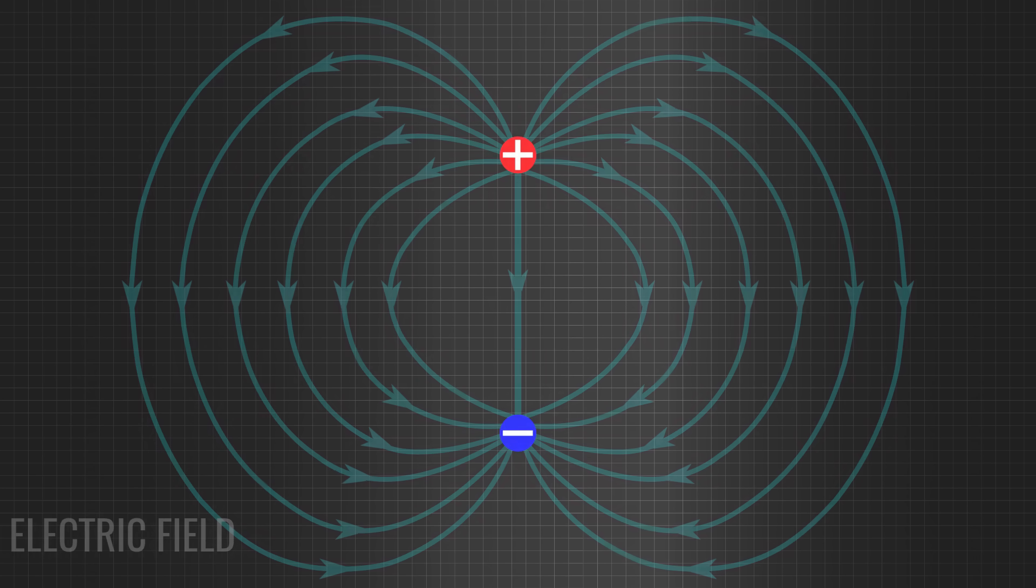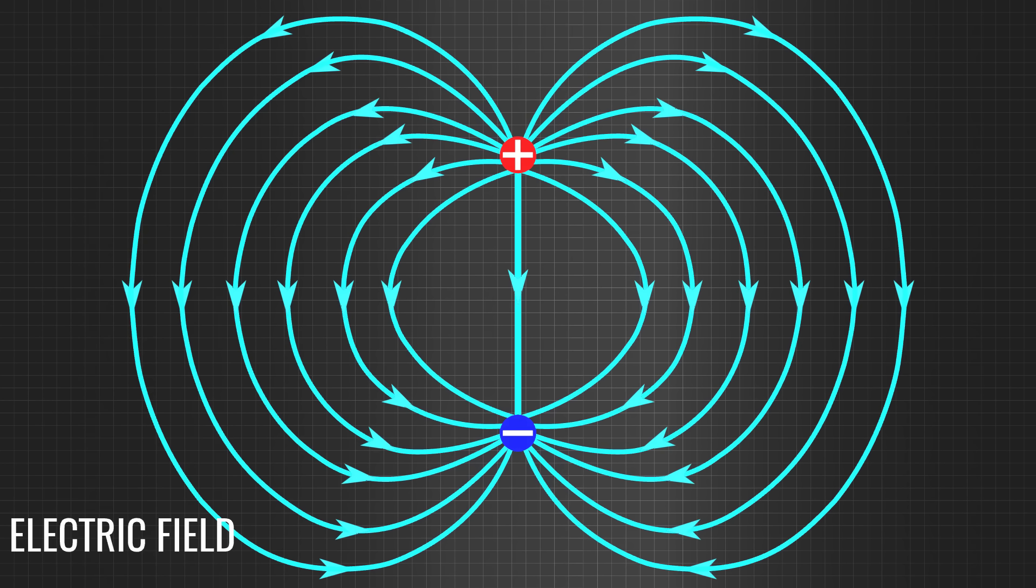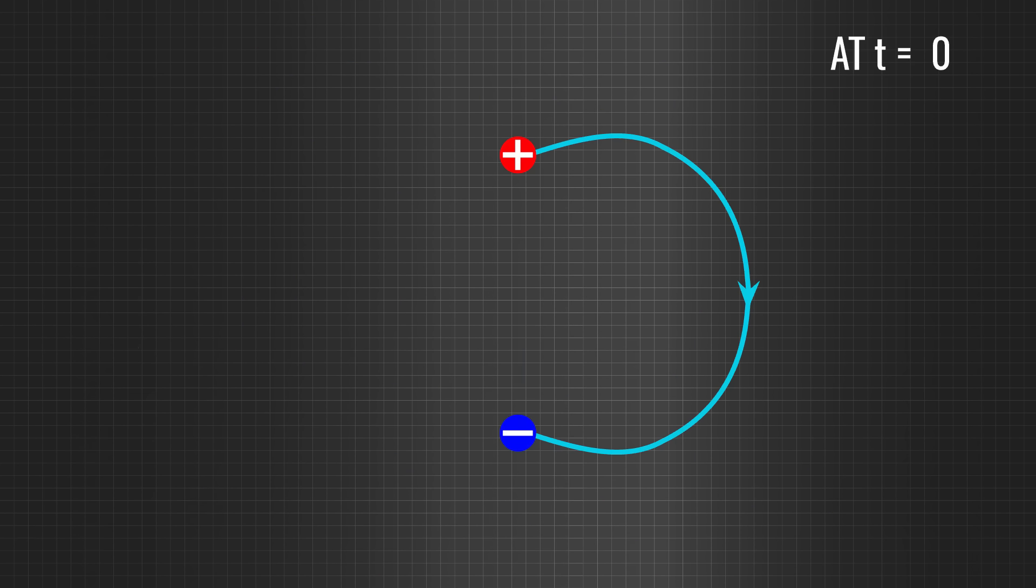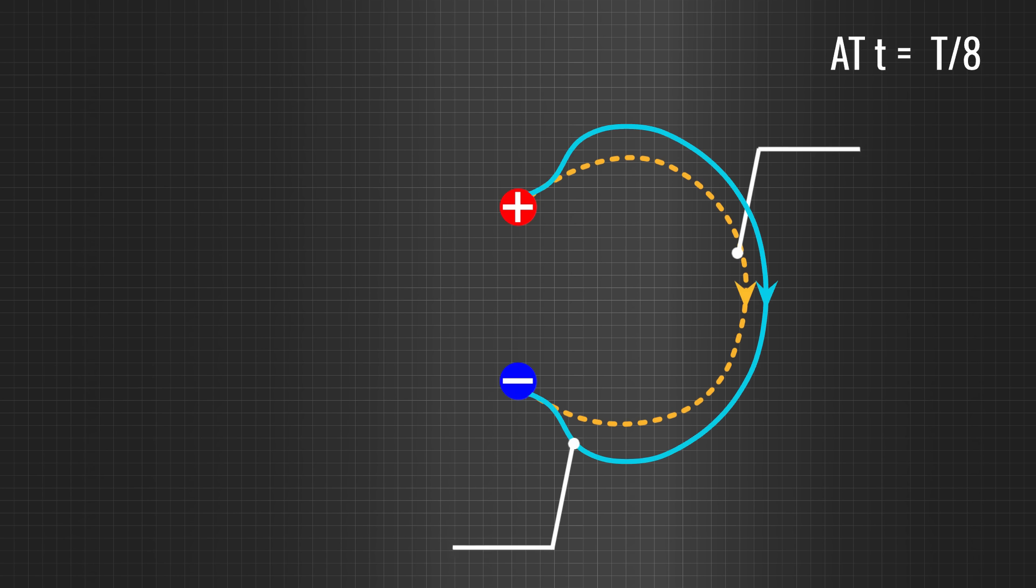The electric field pattern is drawn here when the charges are far apart, and when the velocity is zero. In order to have a better understanding, let's examine one of the electric field lines. Let's observe the electric field line at t by 8. You can see that the electric field line is deformed. The reason for this deformation is simple. This time period is the region with the highest acceleration.